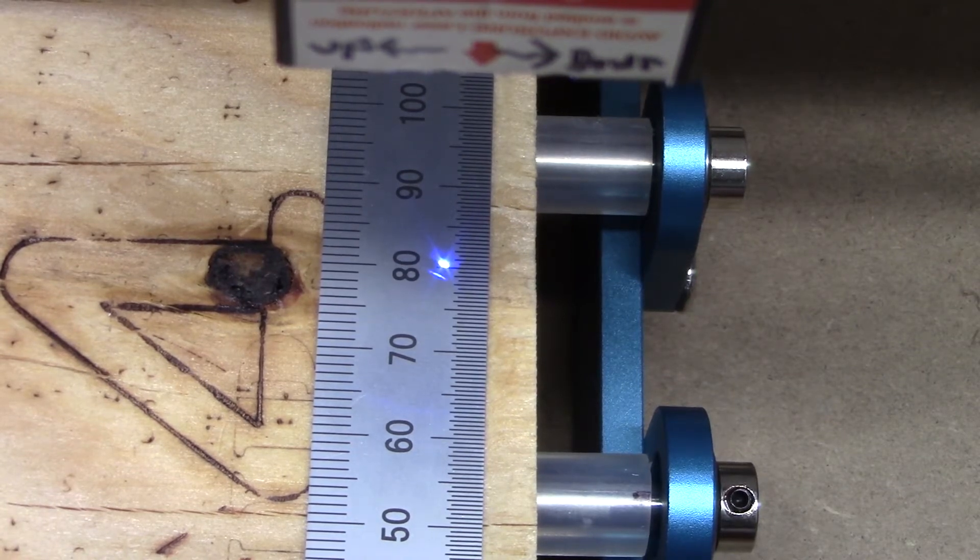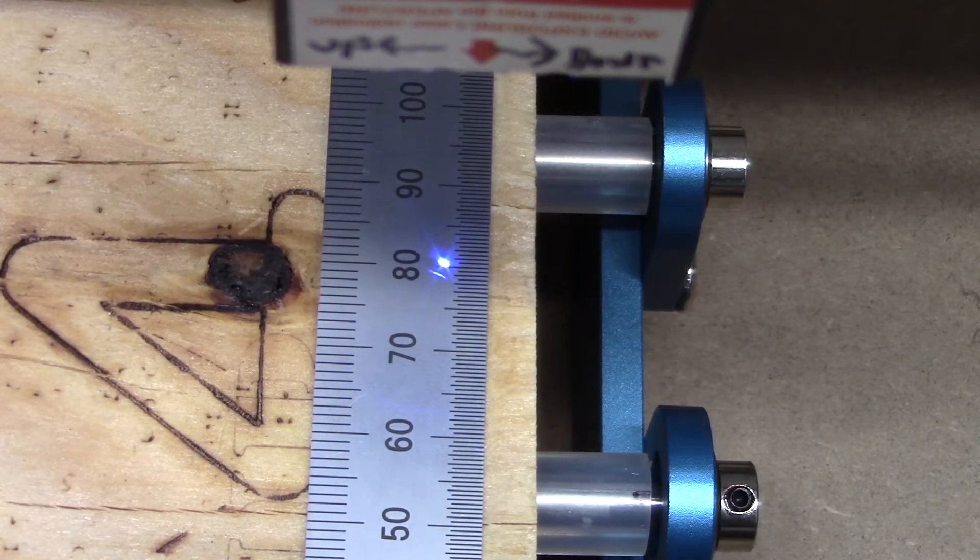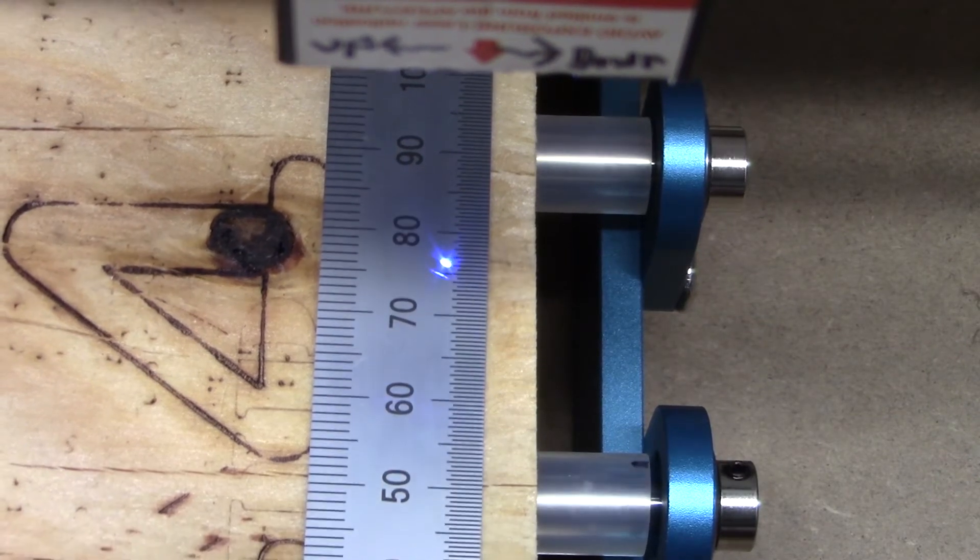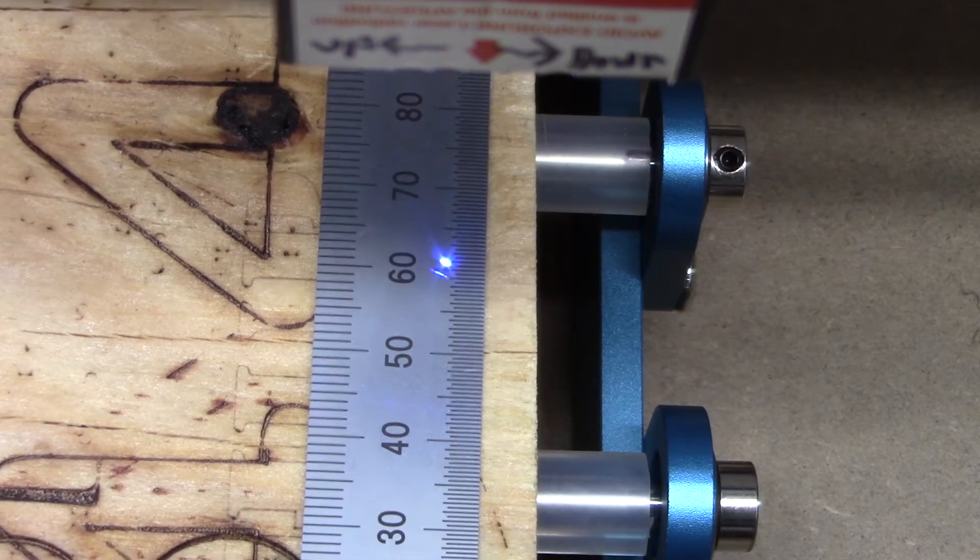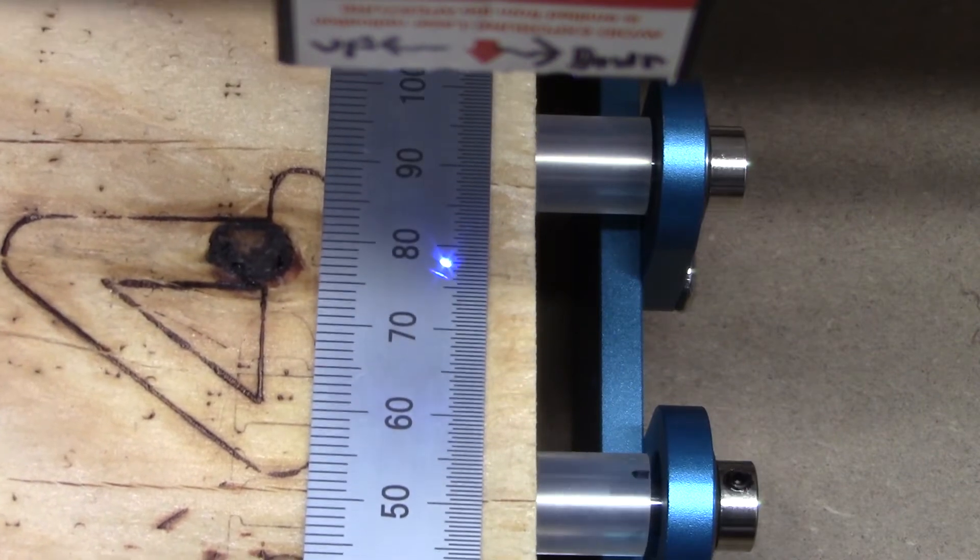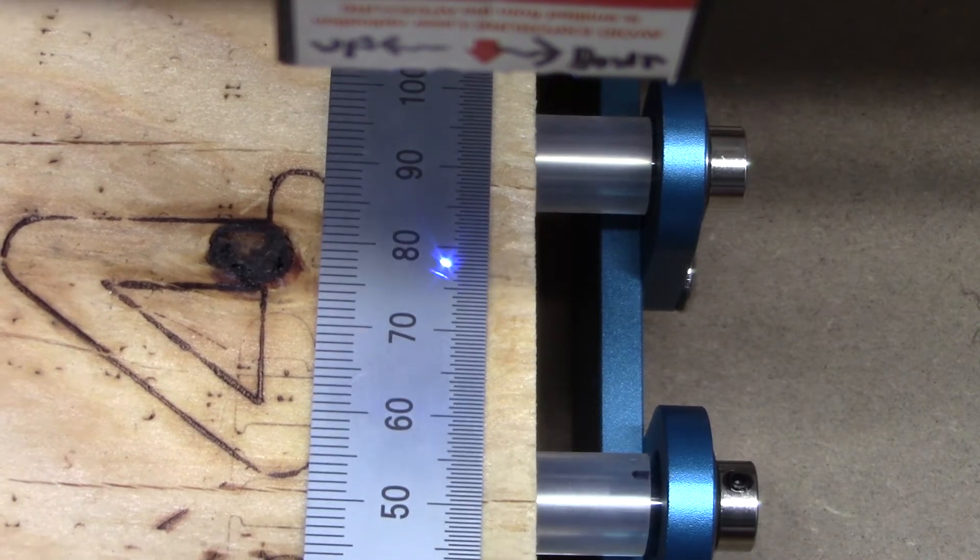After working with SaneSmart on this issue, they determined that there was a problem with what I was burning actually moving. So what I'm going to do is an experiment to see if it's the rotary tool itself being off, or if my material is sliding somehow.